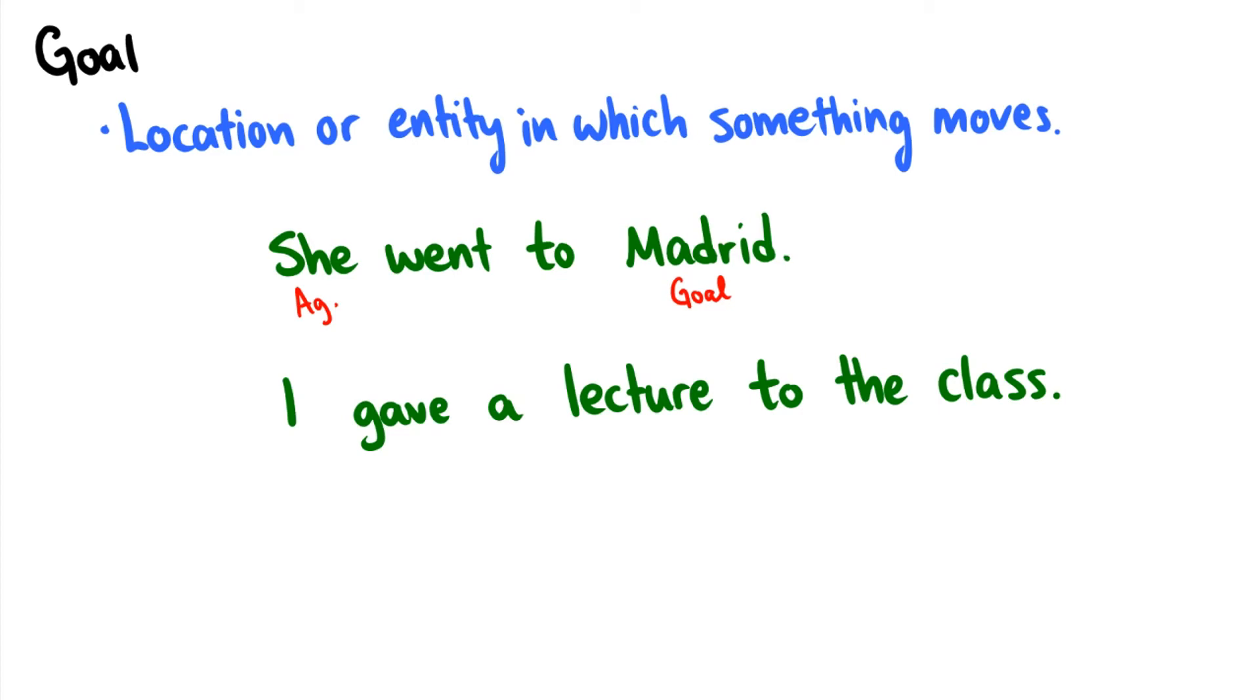If we say I gave a lecture to the class, well, I is the agent here. I'm the one giving the lecture. A lecture is the theme because it is the thing being given. And then the class is the goal. This is different because this isn't a location, but this is an entity. I'm transferring a lecture. I'm transferring my knowledge abstractly to a unit of people called the class. So it's me giving something to an entity. There is this sort of transfer of knowledge. This is much more abstract than someone physically moving to Madrid, but it's the same sort of concept. An initiator is giving something to someone.